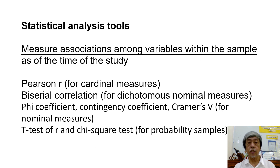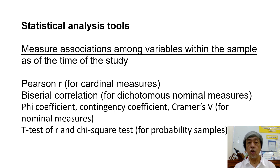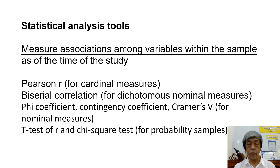And to measure associations among variables within the sample as of the time of the study, we may use Pearson R for variables with cardinal measures, biserial correlation for dichotomous nominal measures, V coefficient, contingency coefficient, and Cramer's V for variables with nominal measures, and t-test of R and chi-square test for probability samples.